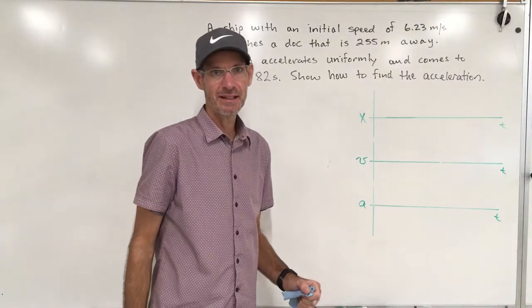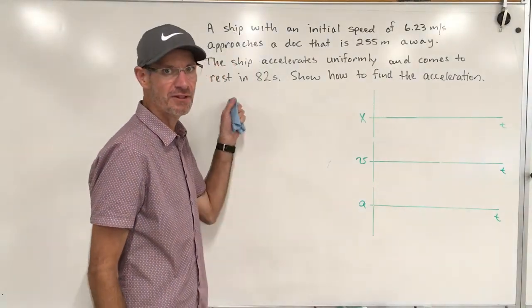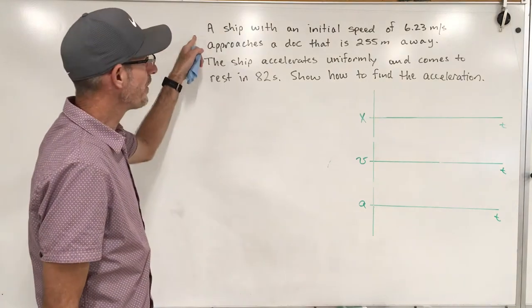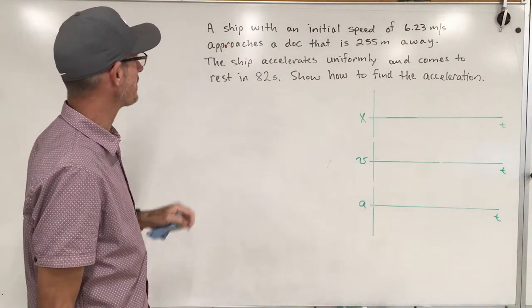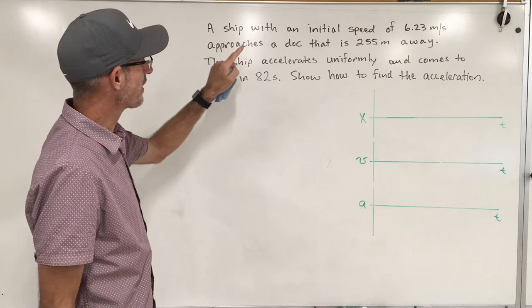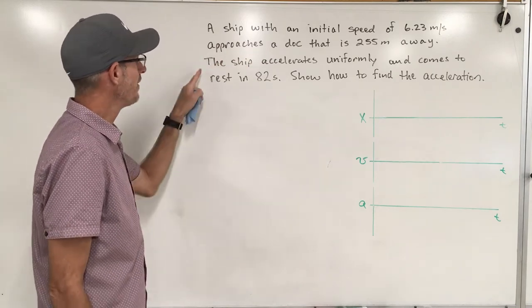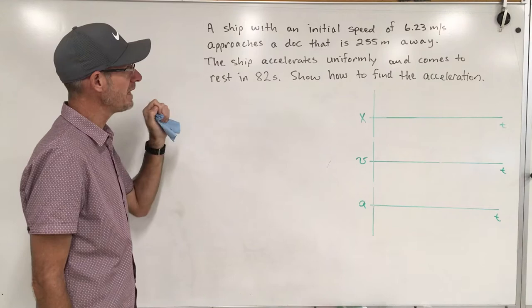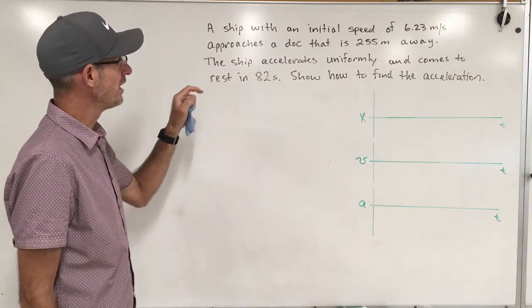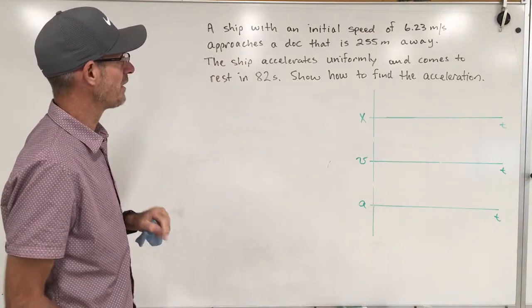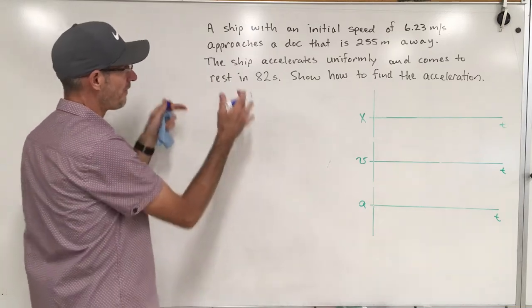All right physicists, let's prepare for the test on Friday by solving this problem. A ship with an initial speed of 6.23 meters per second approaches a dock that is 255 meters away. The ship accelerates uniformly and comes to rest in 82 seconds. Show how to find the acceleration.